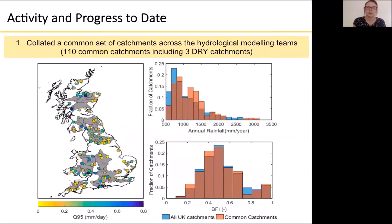What we've been doing so far is we've taken all of the outputs across the Droughts and Water Scarcity programme and collated a common set of catchments — a set of catchments where all the models have been run — and in total there are 110 common catchments. In the map on the bottom left you can see the locations of all the gauges, shown as circles, with the outlines of the catchments in grey. The colours of the circles represent the Q95, the 95th percentile of flow in millimetres per day.